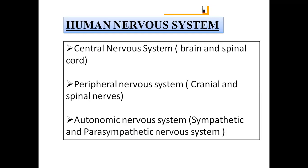Now let us discuss in detail what these parts are. The central nervous system is the part of your body which carries information from all parts of your body and interprets it. After interpretation, it sends instructions to the different glands and muscles of our body — the effectors — to work accordingly. The part of the body which receives information, interprets it, and sends instructions is known as the central nervous system. This is the brain and spinal cord.